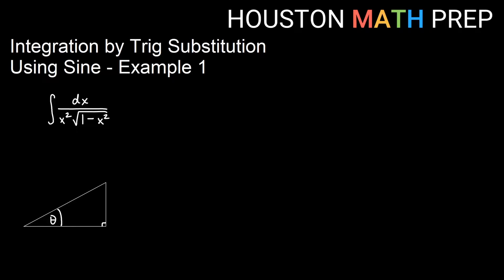Hey everyone, welcome back. We are doing our first example for a sine trig substitution. I have the integral of dx over x squared times the square root of 1 minus x squared.